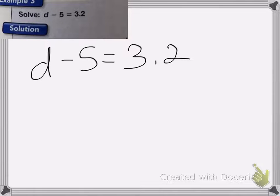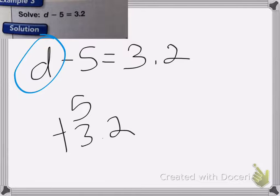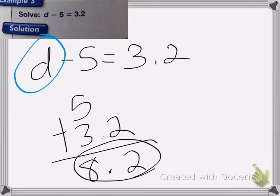Here I know that some big number minus 5 equals 3.2. That means that D has to be the biggest number of these three numbers. So to solve for D, I'm going to add 5 plus 3.2. So add those up, we get 2, decimal point comes straight down, 5 plus 3 is 8. So D is equal to 8.2.